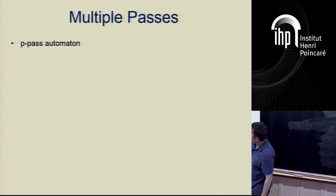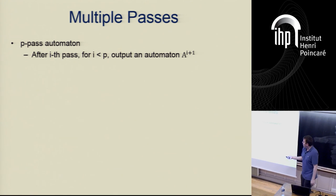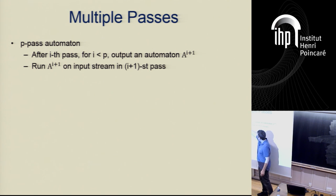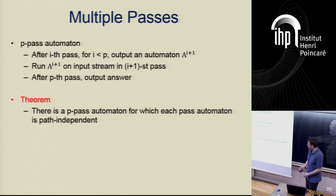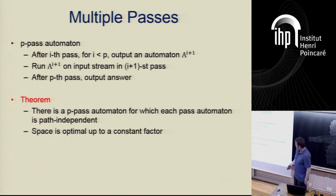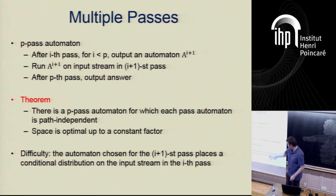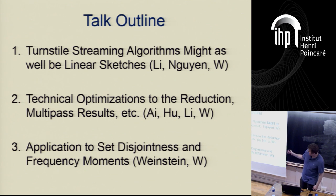For multiple passes: a P-pass automaton after each pass i < P outputs an automaton for the next pass. We can show there's a P-pass automaton where each automaton output in each pass is path independent, and the space is again optimal to a constant factor. There are difficulties: outputting an automaton for the next pass places a conditional distribution on the input stream, which must be handled in the analysis.